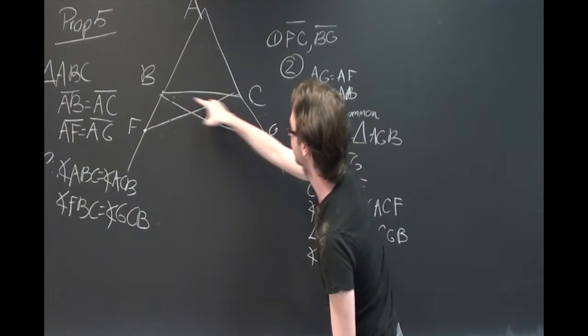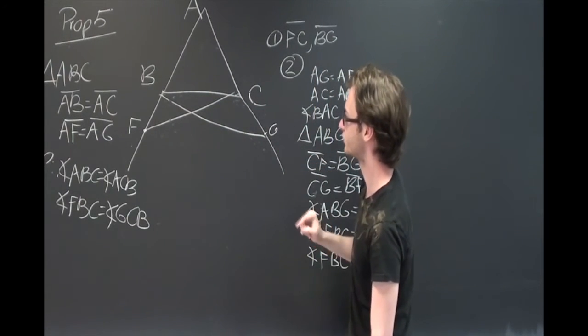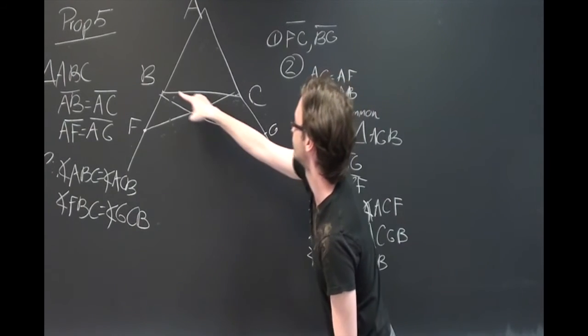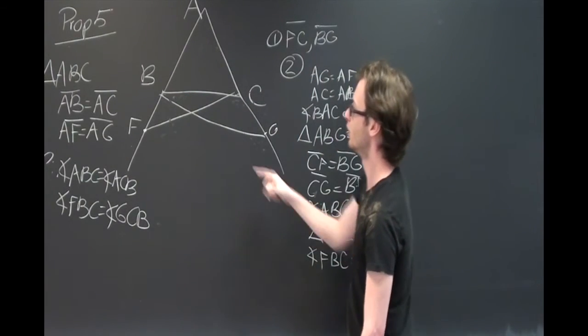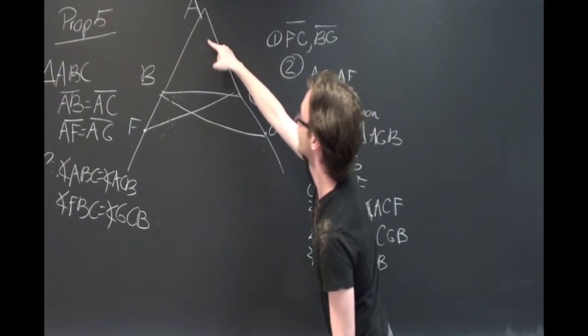And now that we know that FBC and BCG are equal, and because the triangles are equal, we also know that BCF and GBC are equal. When we take FBC and subtract GBC, we are left with ABC.